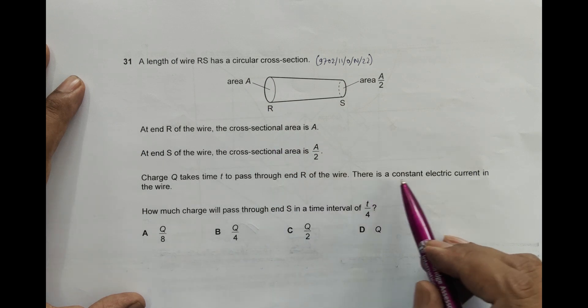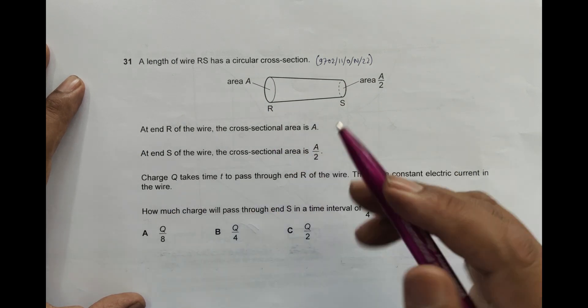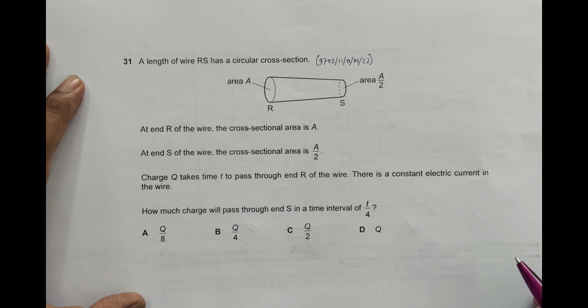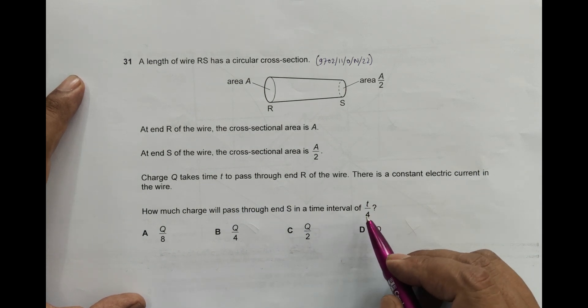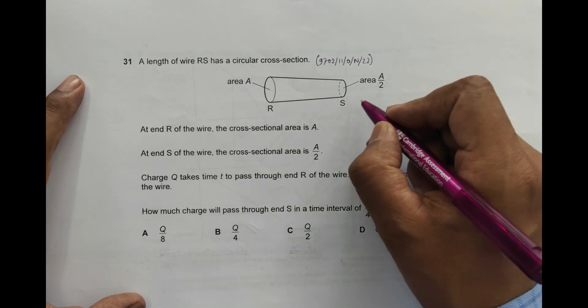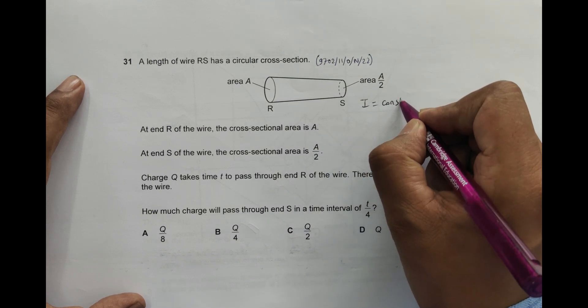There is a constant electric current in the wire. How much charge will pass through end S in an interval of t by 4? What it says is the current is equal to constant.